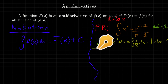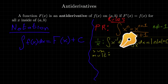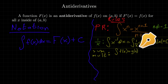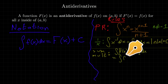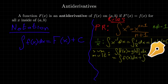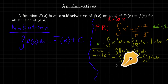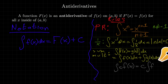We also have the sum and multiple laws, which work just like they do for derivatives. If you're finding the antiderivative of the sum of two functions, you just find the antiderivative of each function separately and add them. And if you have a constant multiplying your function, the constant simply factors out and you find the antiderivative of the function itself.